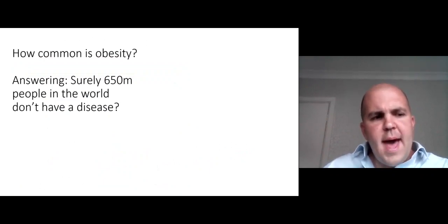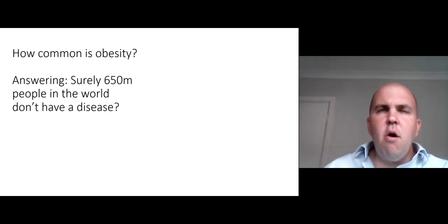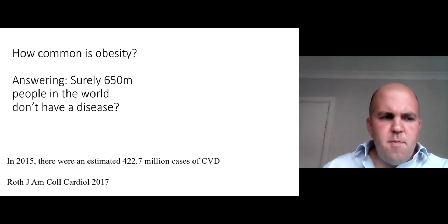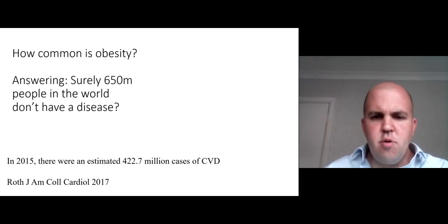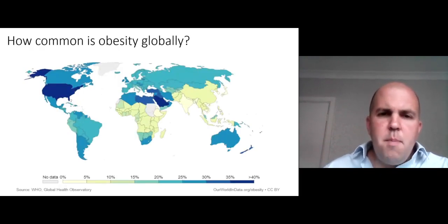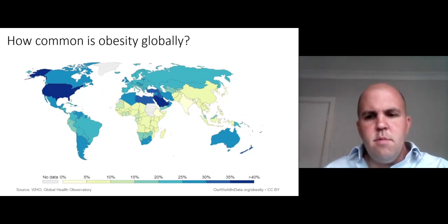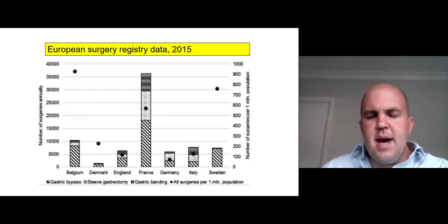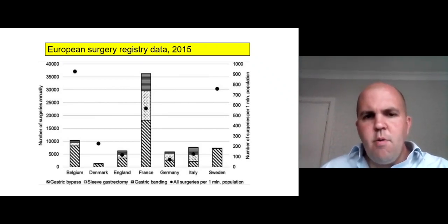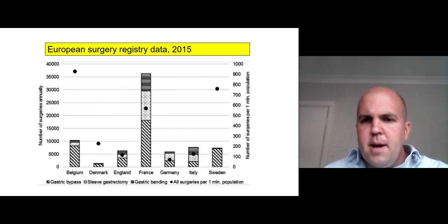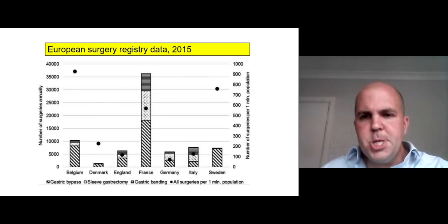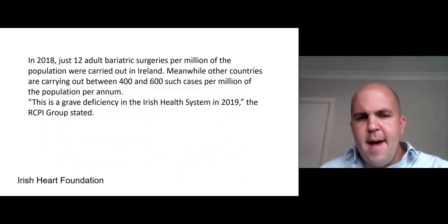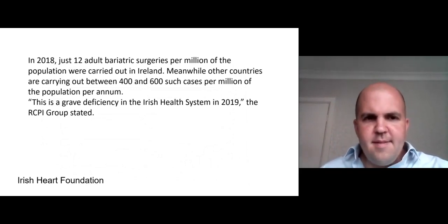How common is obesity? Some people say 650 million people in the world surely can't have a disease — but those people wouldn't question cardiovascular disease, which affects around 422 million people. On this map, the darker the shading, the more common the prevalence of obesity. When we look at access to treatment, the black dots represent surgeries per million population. Sweden performs around 750 surgeries per million, compared to Irish data from 2018 showing only 12 adult bariatric surgeries per million — a very stark difference.